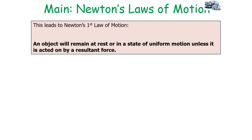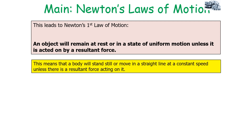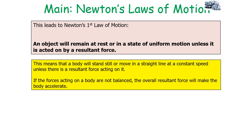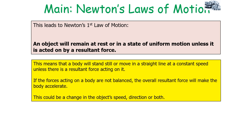This leads to Newton's first law of motion: an object will remain at rest or in a state of uniform motion unless it is acted upon by a resultant force. This means that a body will stand still or move in a straight line at a constant speed unless there is a resultant force acting on it. If the forces acting on a body are not balanced, the overall resultant force will make the body accelerate. This could be a change in the object's speed, direction, or both.